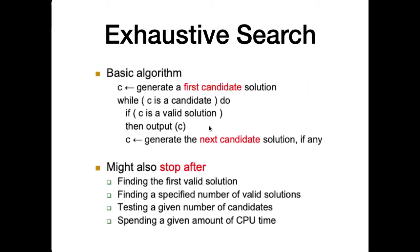In this slide, we present a simple pseudocode for exhaustive search. It starts by generating a first candidate solution. Then inside a while loop, you check if the candidate is a valid solution. If it's valid, output it. If not, generate the next candidate solution. This loop stops after generating all possible candidate solutions.